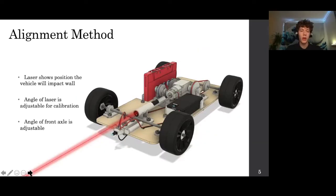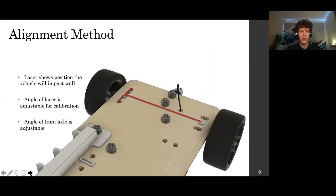The alignment of the car is utilizing a laser which indicates where the car will impact the wall. Its angle can be calibrated as can the axles. This will facilitate more precise runs with reduced deviation.